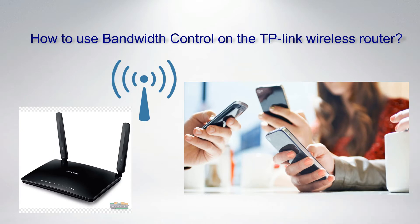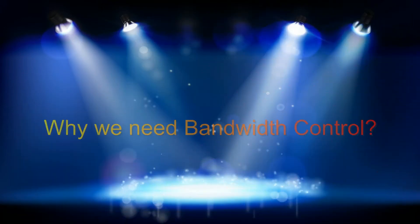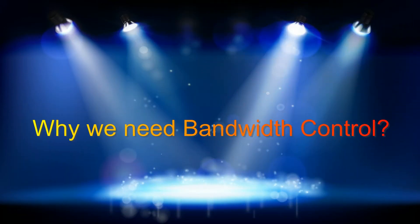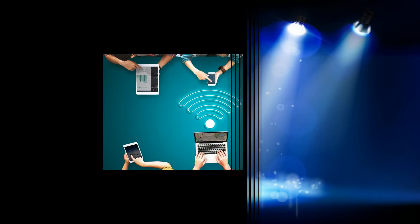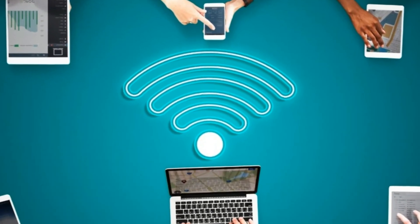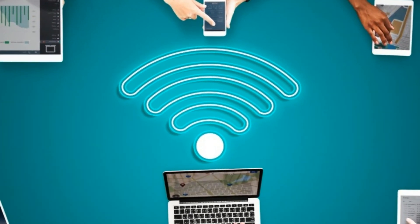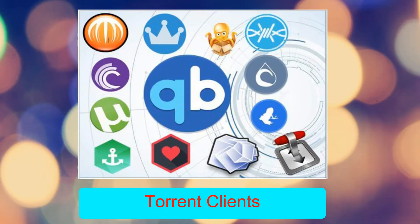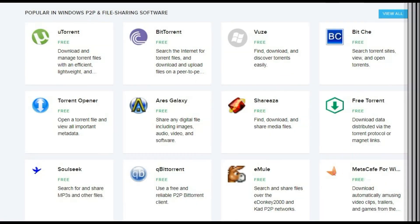Hello guys, today I will show you how to use bandwidth control on the TP-Link wireless router. Why do we need bandwidth control? Within a normal home network, the bandwidth is shared by all computers, laptops, and mobiles. Any computer using a high bandwidth application, for example torrent programs or other P2P software, will affect other computers.